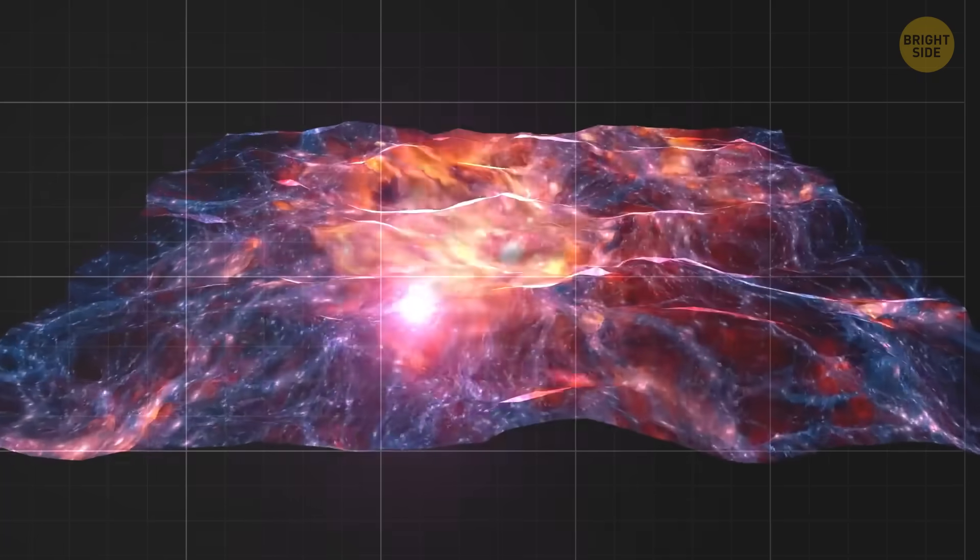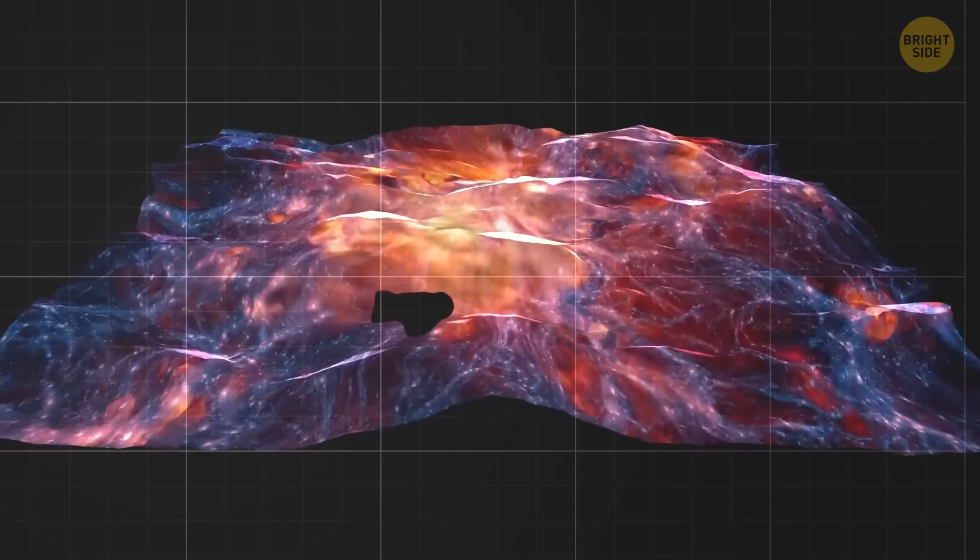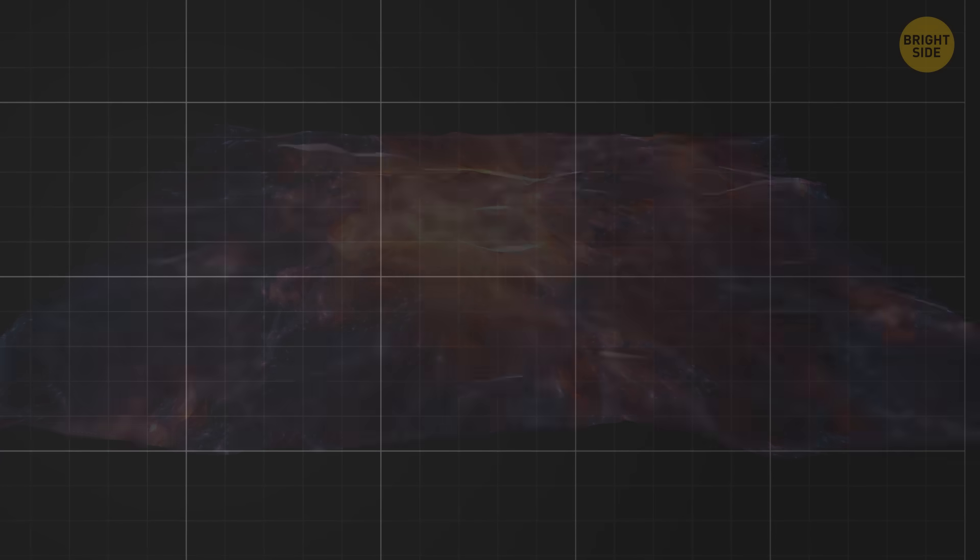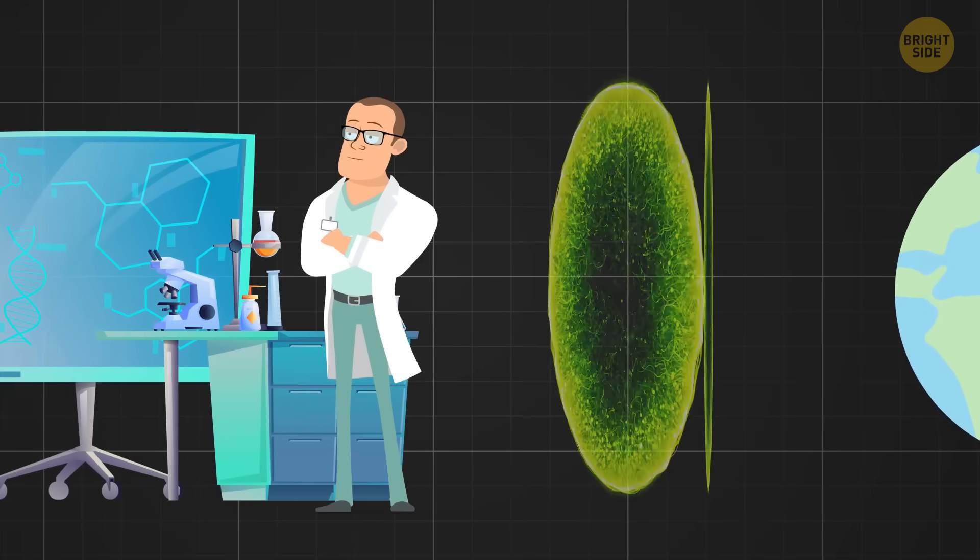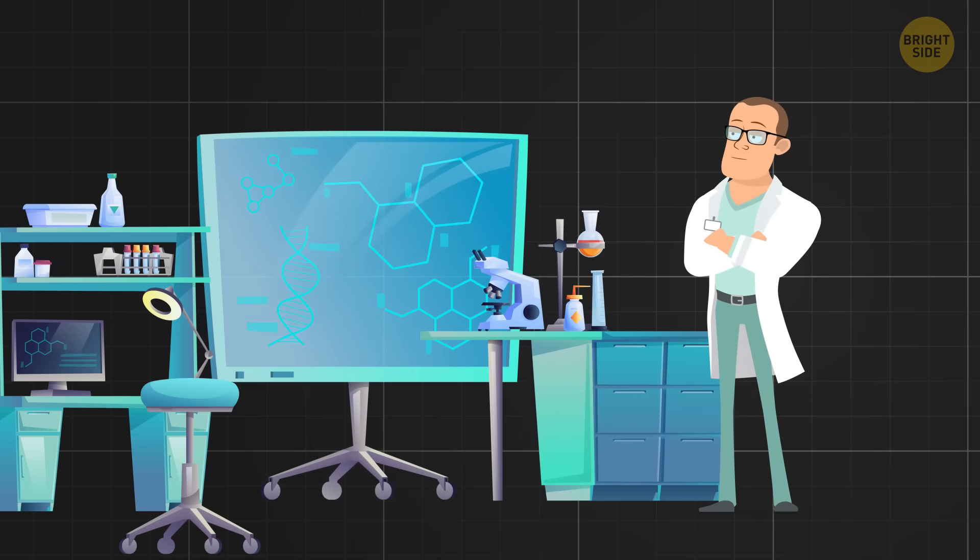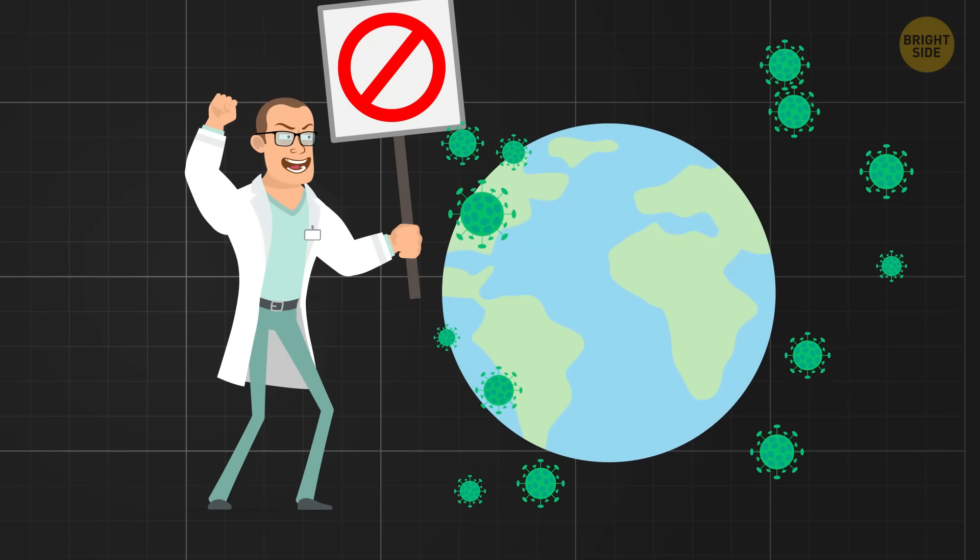There's another theory that the universe allows paradoxical things to happen, but also self-corrects them. Imagine a time traveler going back to stop some health condition from spreading. According to this theory, even if the traveler succeeds, this health condition would find another way to spread, avoiding the paradox.